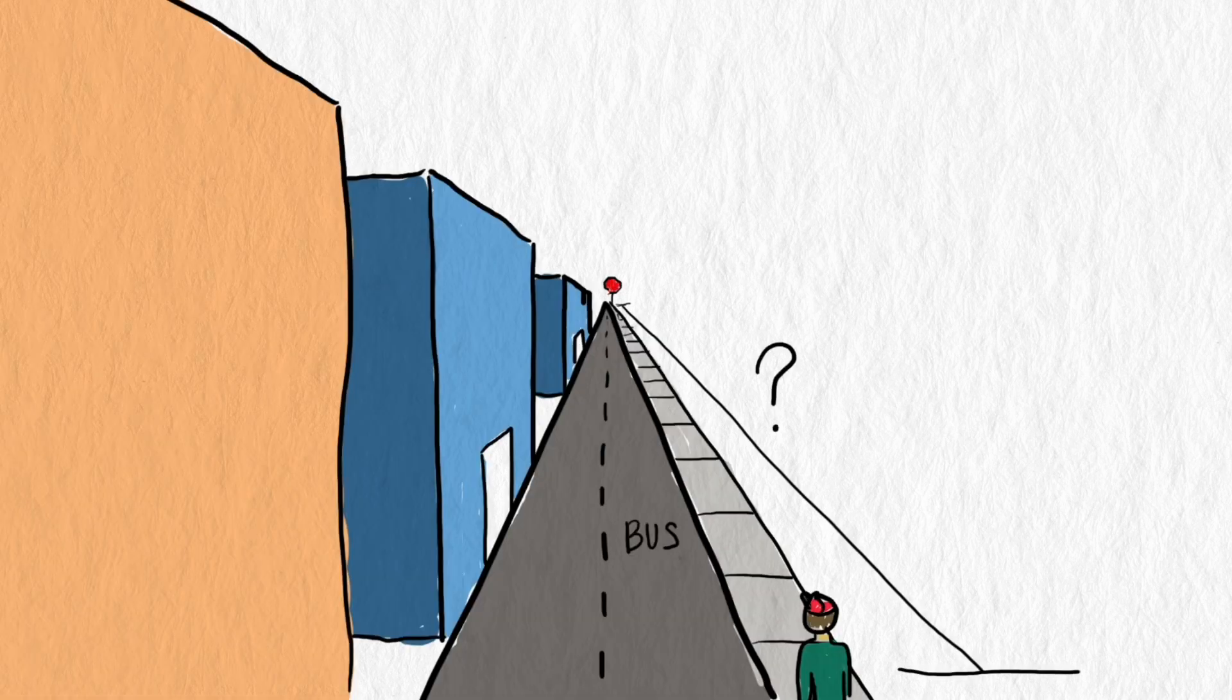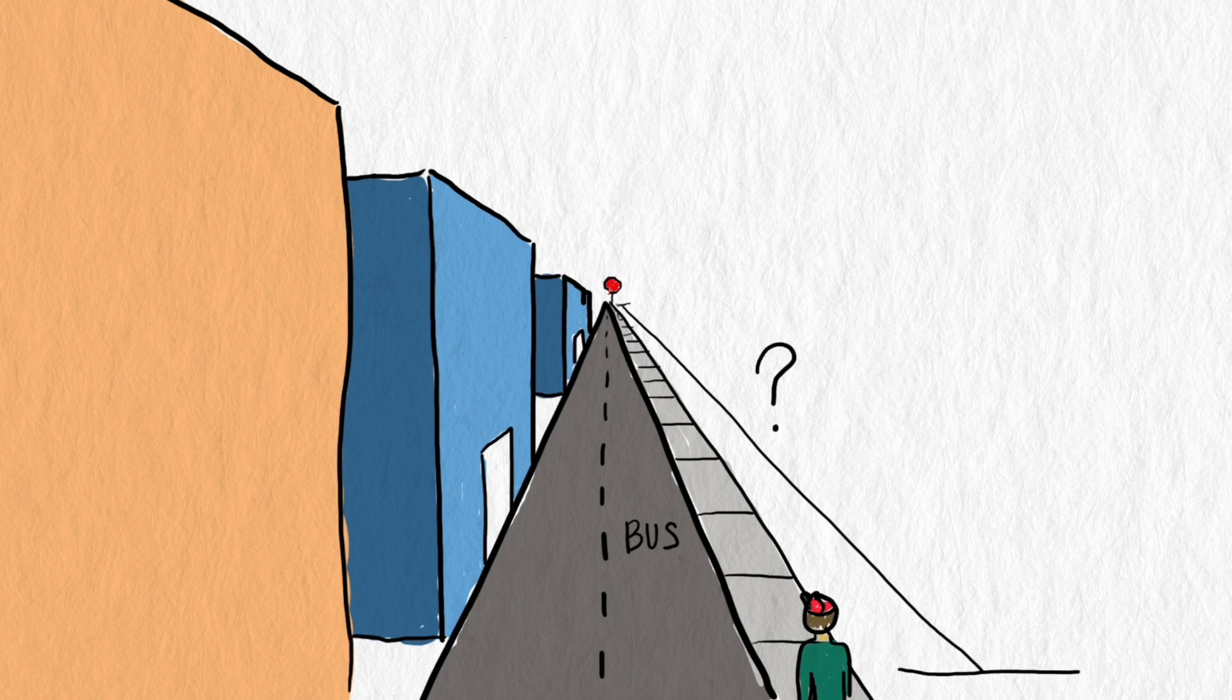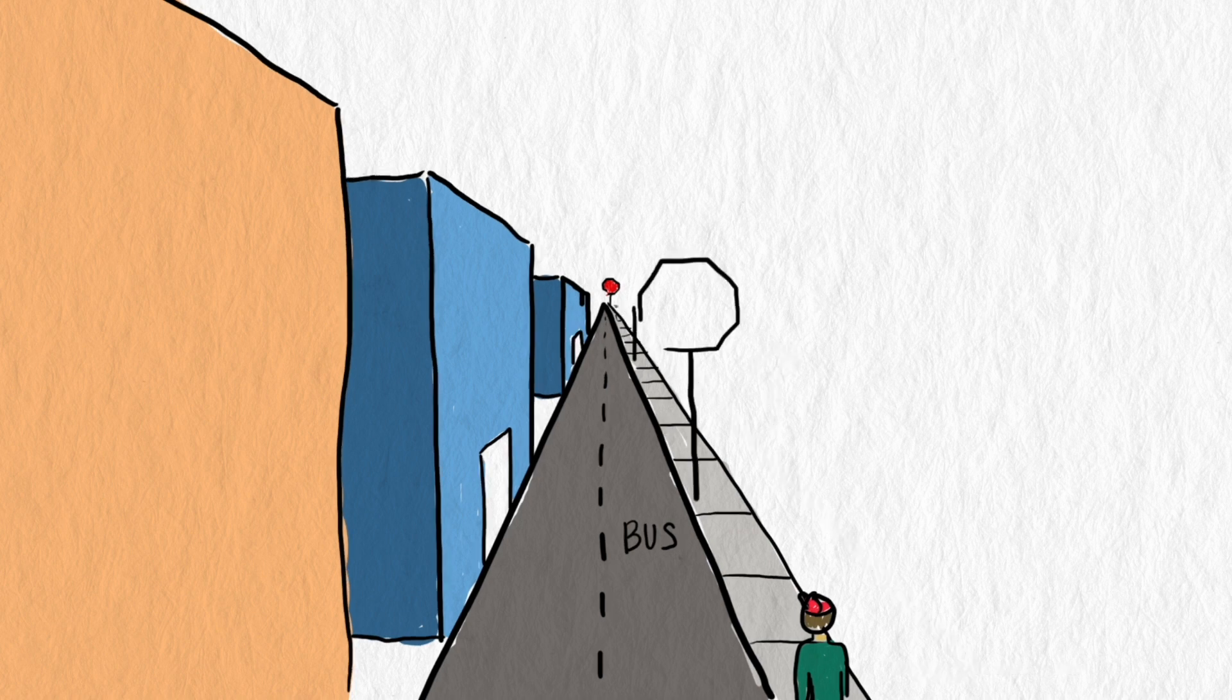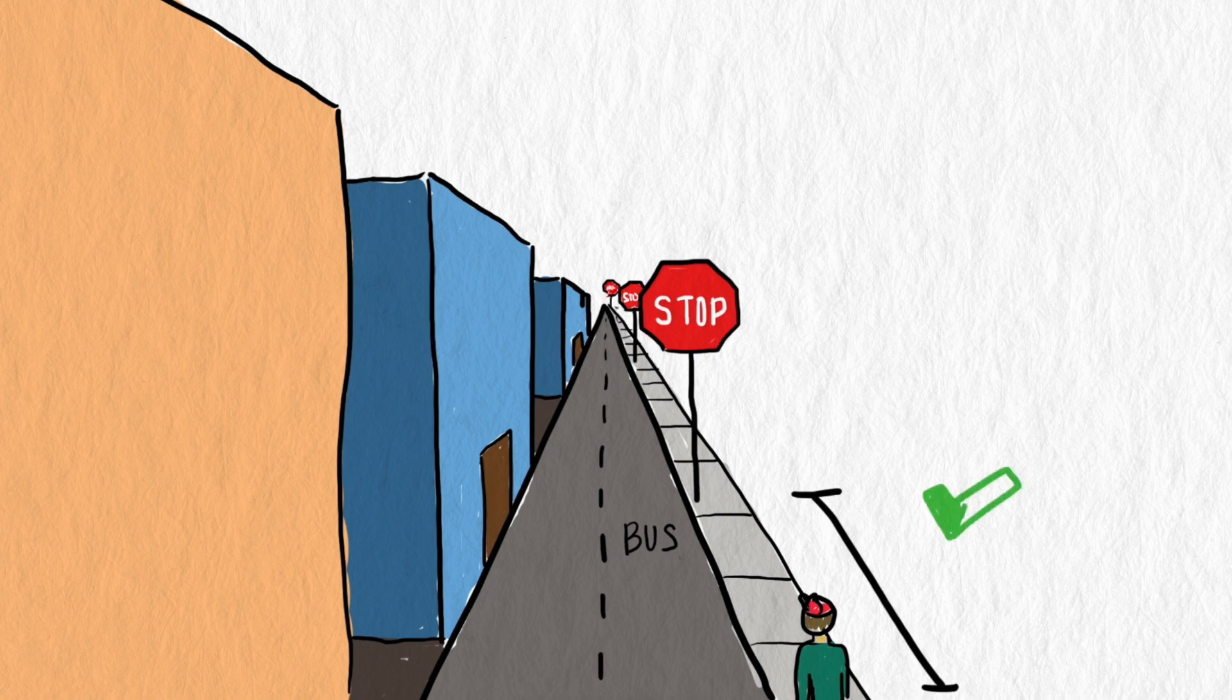One day while riding to work I noticed that the bus stops seemed really far apart. I was sure that the designers made a mistake and that the bus stops could have been closer. Then passengers would have shorter walks at the end of their trips and even with a few more stops while they're on the bus it would save them some time.